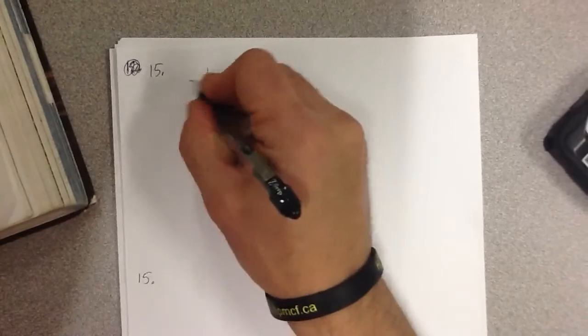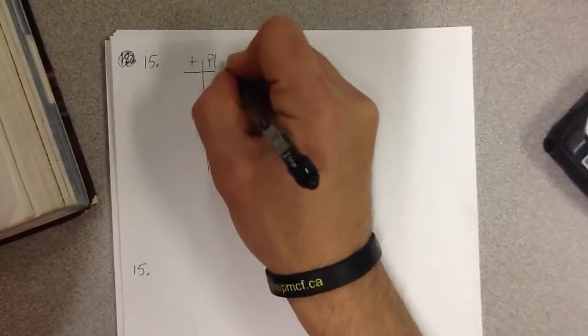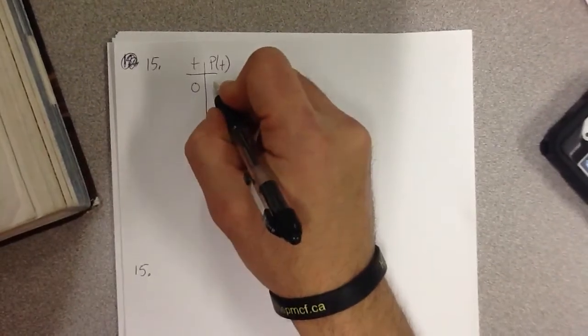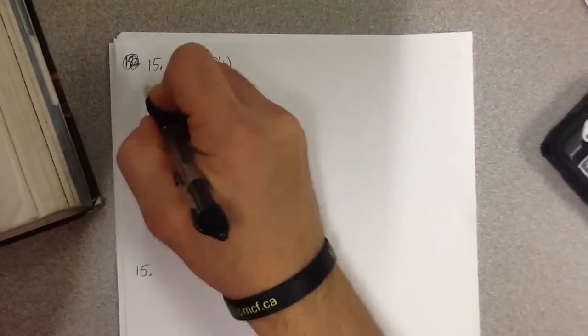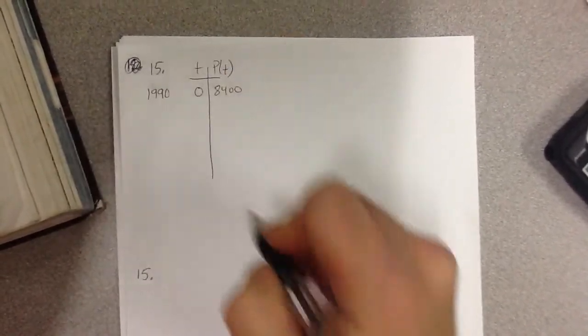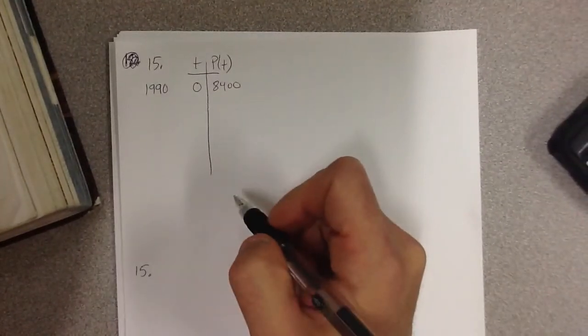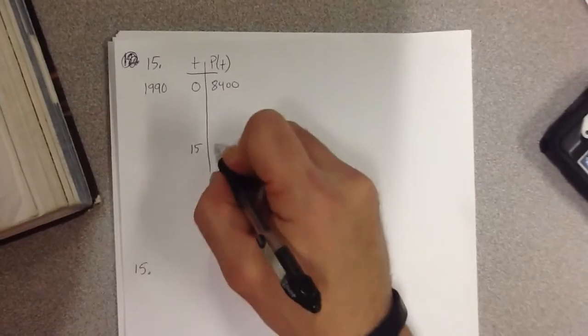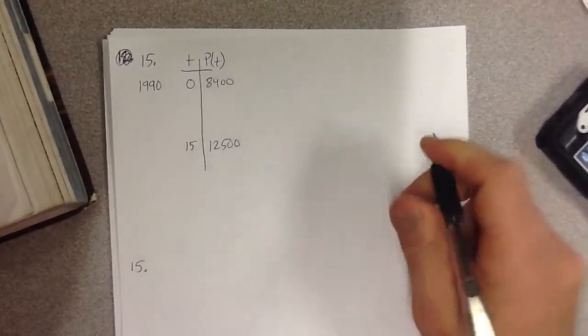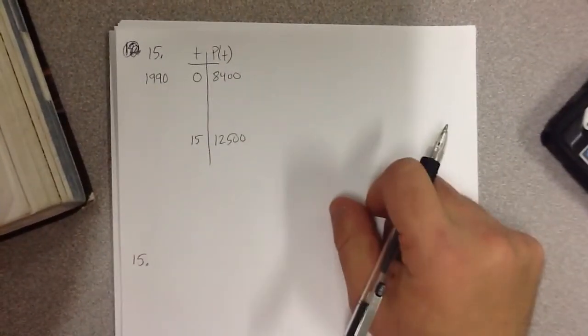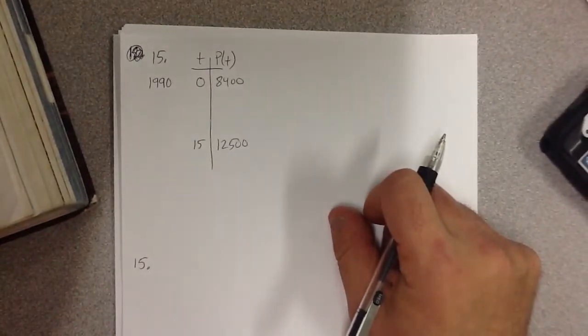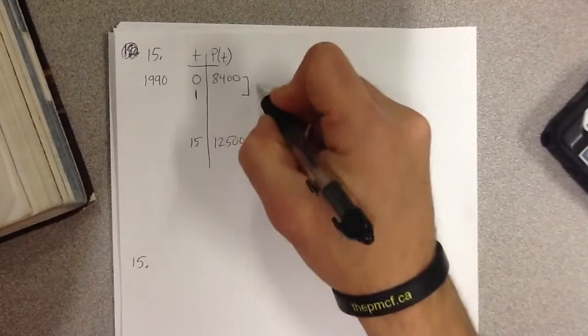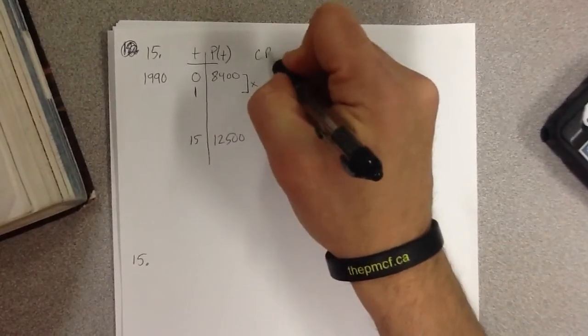So I'm going to just write down time and population as a function of time. Initial time, the population is 8,400. Now that happens in the year 1990, but that's initial time. And then it says 15 years later, the population is 12,500. So this is what they give you. Now, how do you come up with the growth rate? Well, the growth rate, you have to know what the growth rate is per year. So you're trying to come up with the common ratio first.